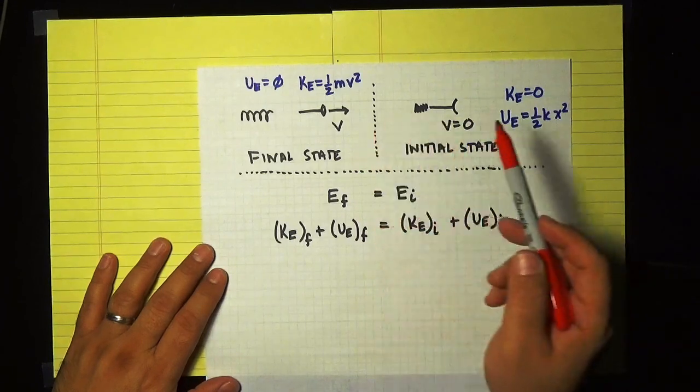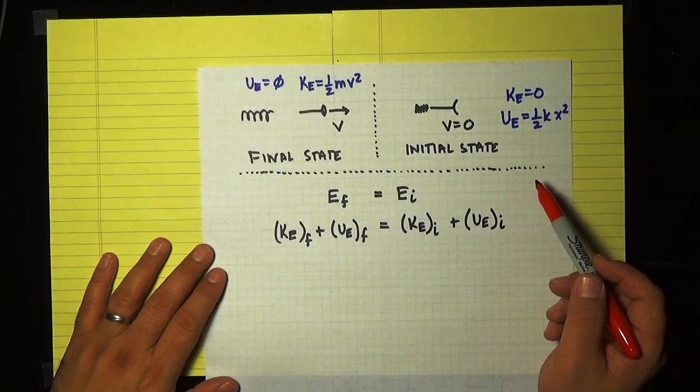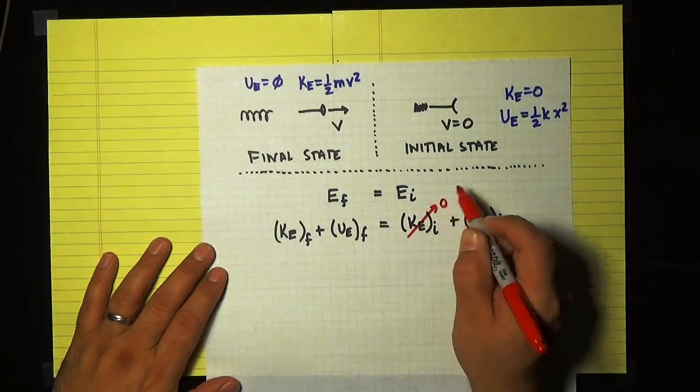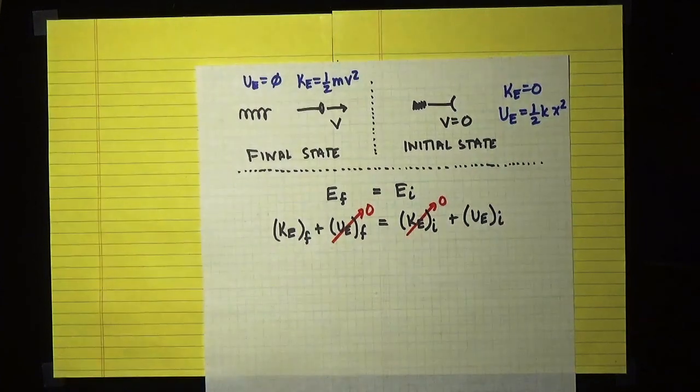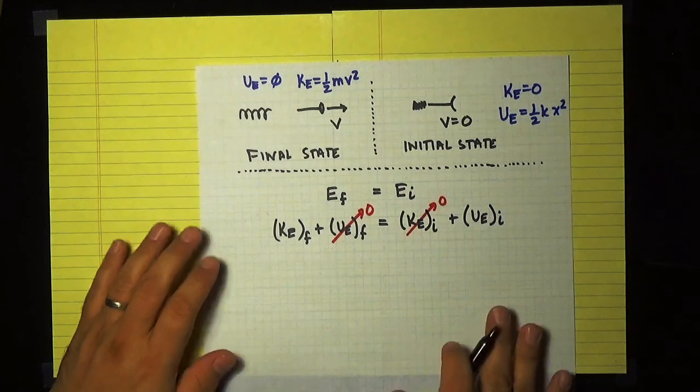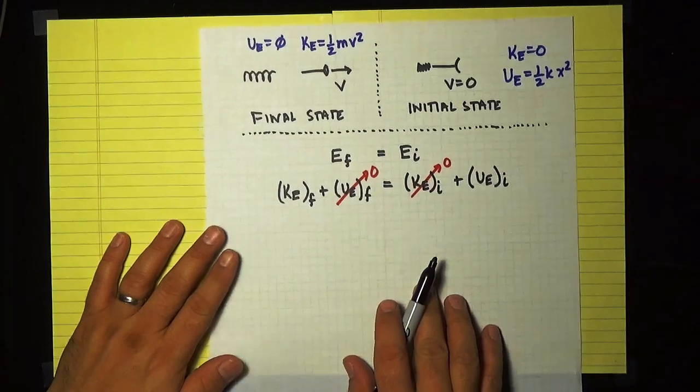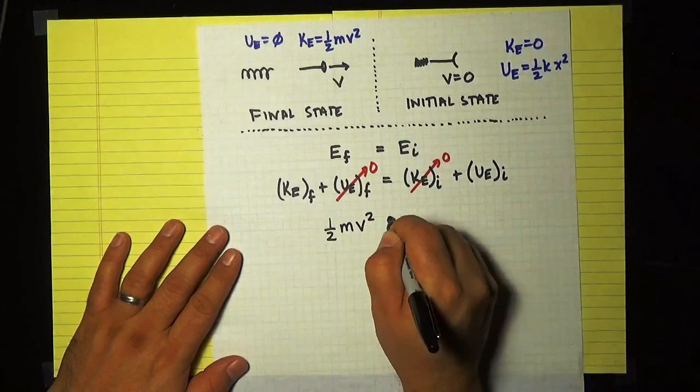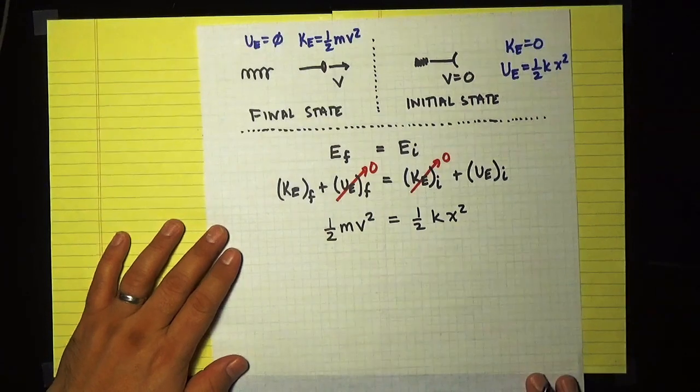And as we noted up here in our problem setup, we have a situation where in each of these two states, one of the contributions to the total energy is zero. In our initial state, the initial kinetic energy is zero. And in our final state, the final potential energy is zero. And so if I make those substitutions, I find that my final kinetic energy is equal to my initial potential energy or a half mv squared is equal to a half kx squared.